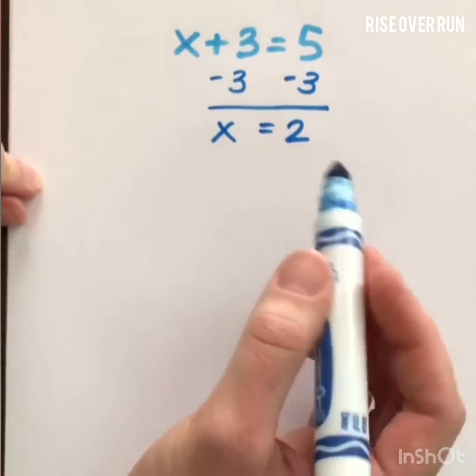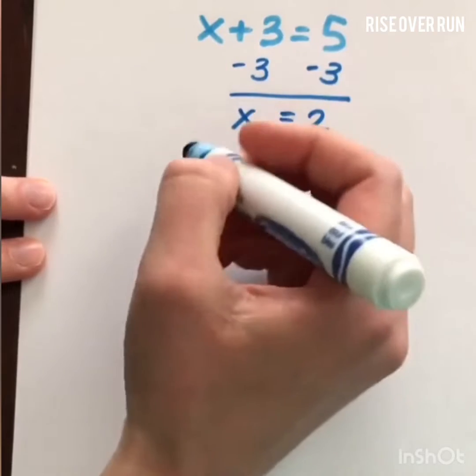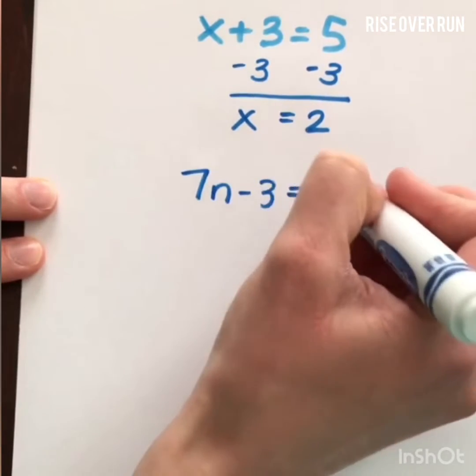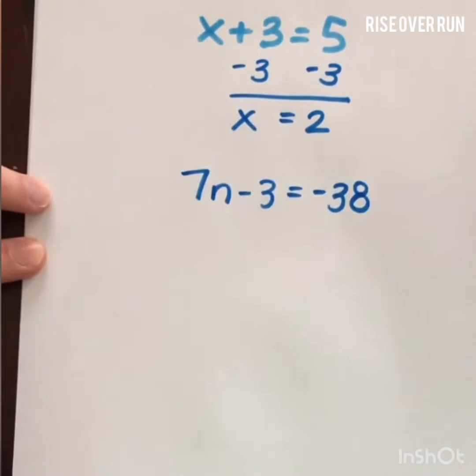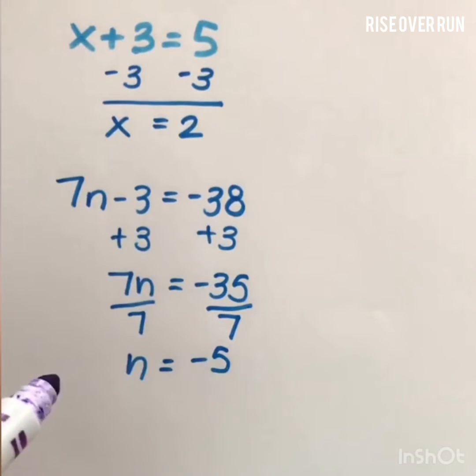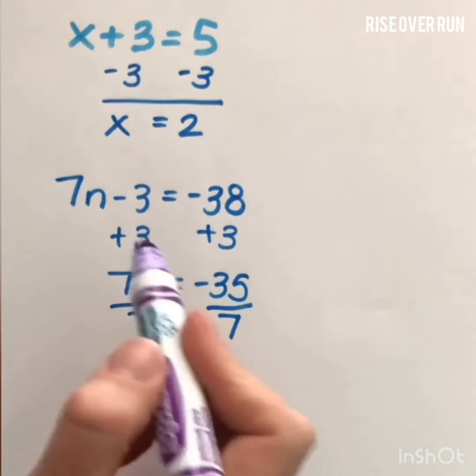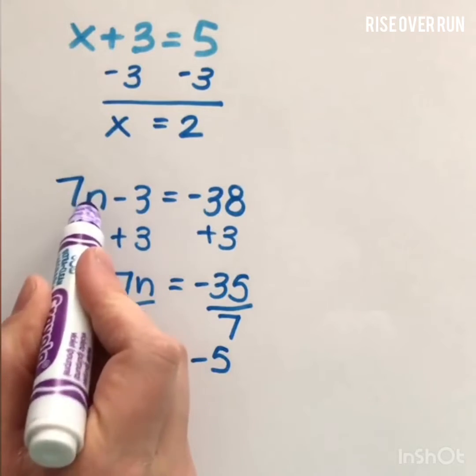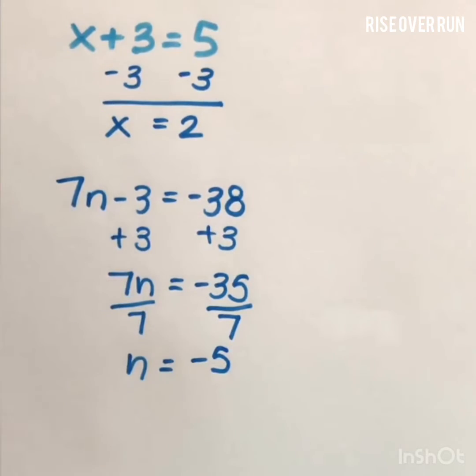As we get into more difficult equations, we want to keep in mind how we're going to use these steps to solve. So let's look at this one: 7n minus 3 equals negative 38. How do we know what order to do these operations? A common misconception is that you just do order of operations backwards, but that's not always true. You have to look at what order the operations were done to the variable in that specific problem.